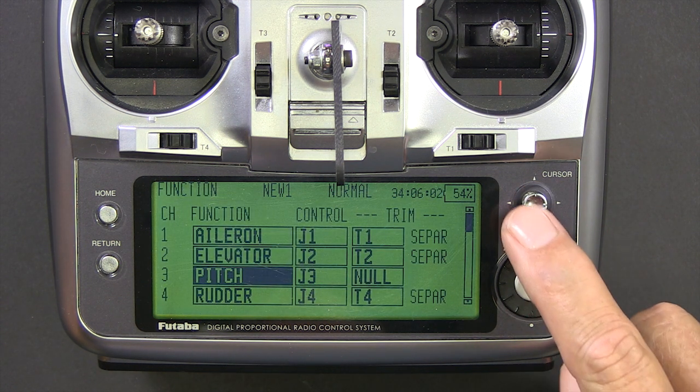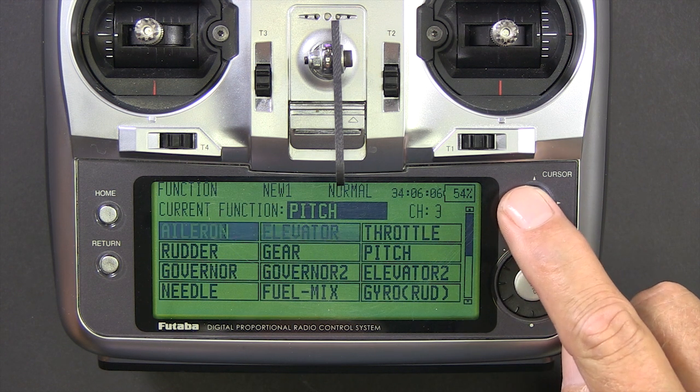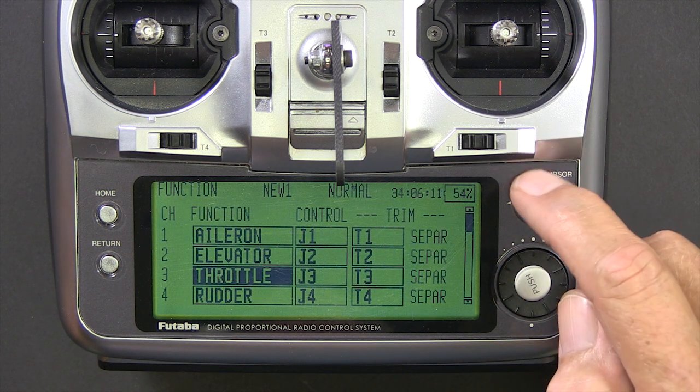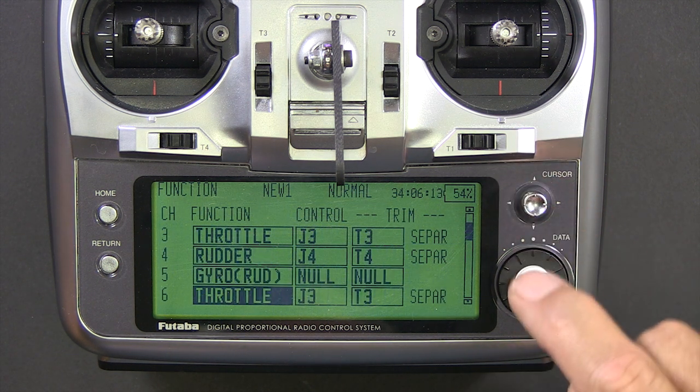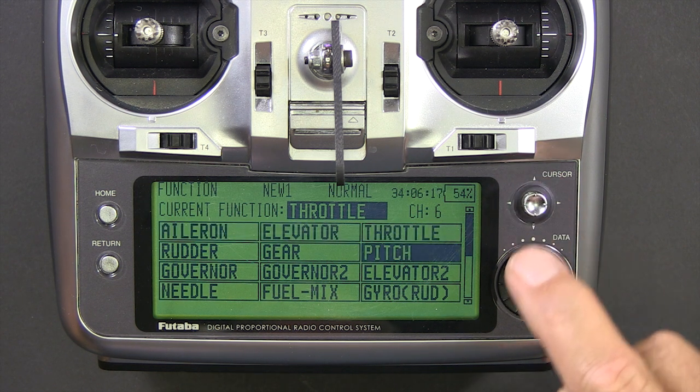Now if you have a 12Z, don't forget we changed channel 3 to throttle and channel 6 to pitch. You don't have to do that if you're using a standard receiver, but you got to jockey the wires around a little bit.